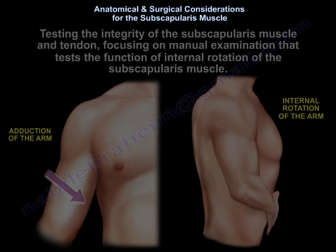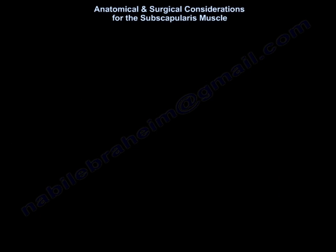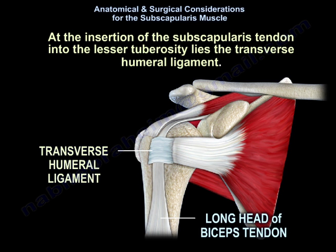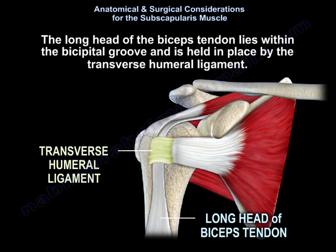Testing the integrity of the subscapularis muscle and tendon focuses on manual examination of internal rotation. At the insertion of the subscapularis tendon into the lesser tuberosity lies the transverse humeral ligament. The long head of the bicep tendon lies within the bicipital groove and is held in place by the transverse humeral ligament.